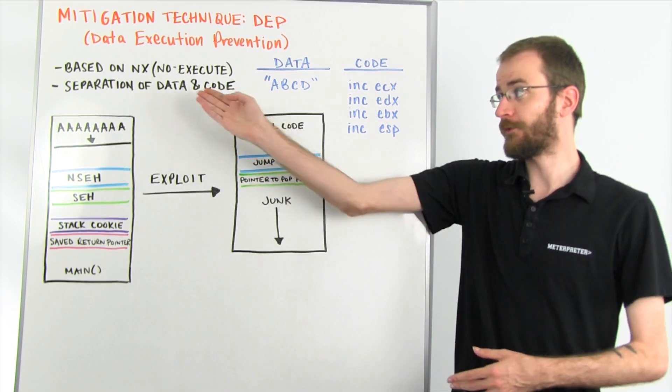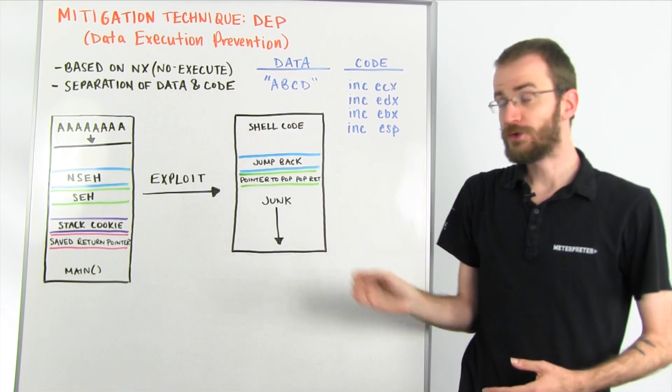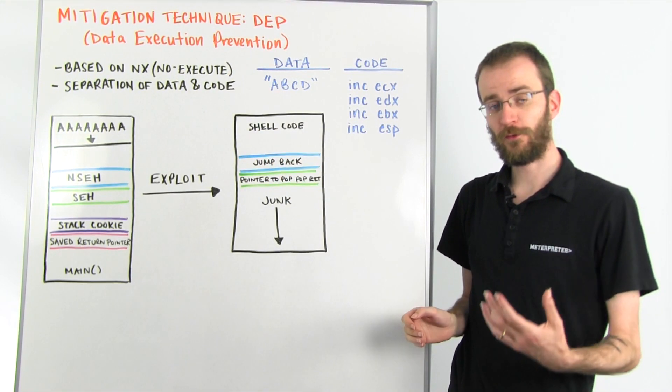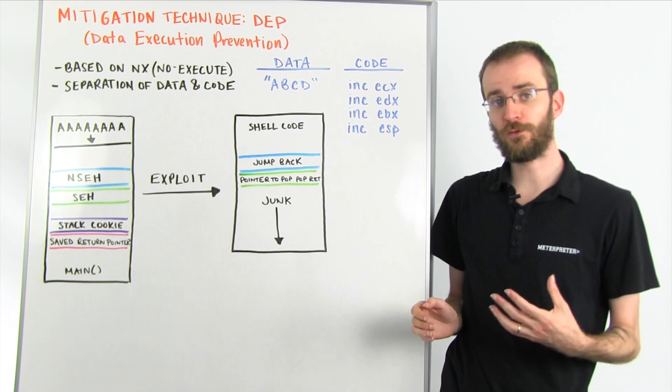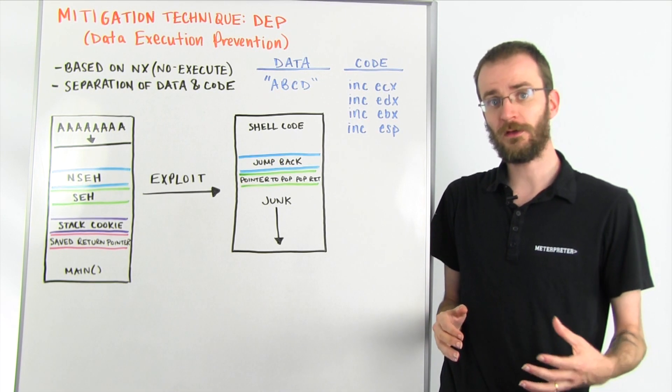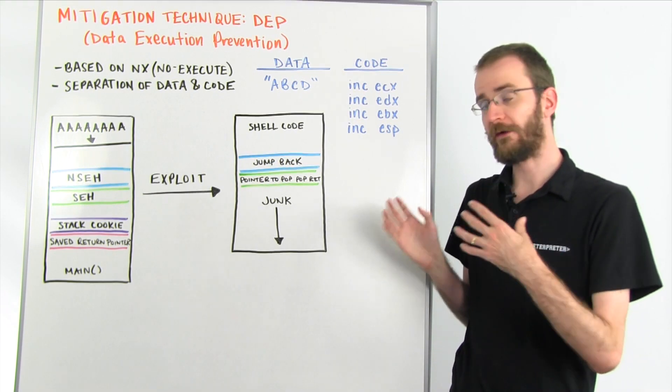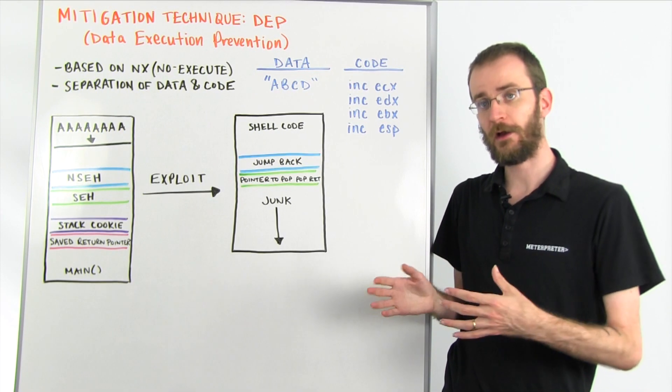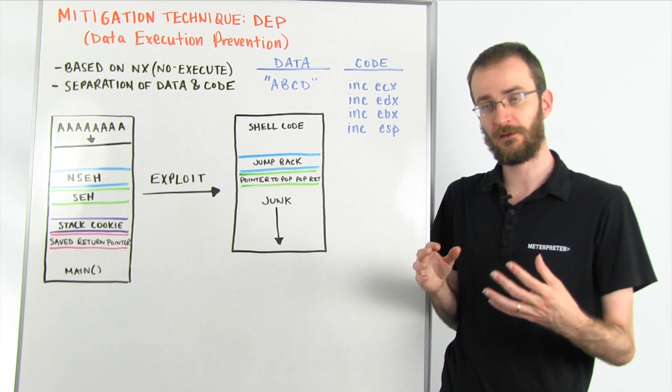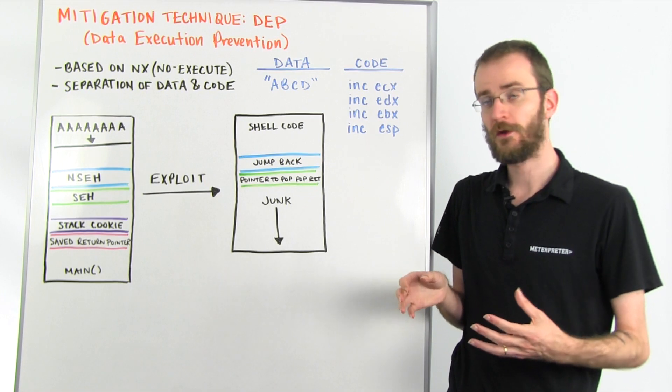DEP is all about the separation of data and code. So typically speaking, when a program runs on a computer, there is no difference to the computer between data and code. It's just where it finds it determines how it treats the bytes of data that it's seeing.